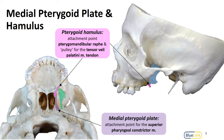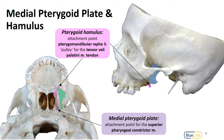The medial pterygoid plate is longer and is associated with the pharynx. Here is our maxilla and the hard palate, and the palatine portion of the hard palate that we can see into our nasal cavity. The space coming out toward us is the pharynx. The pterygoid plate is an attachment point for the superior pharyngeal constrictor. The process that extends inferiorly from the medial pterygoid plate is called the pterygoid hamulus.